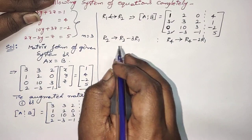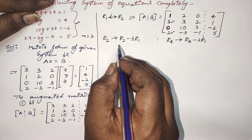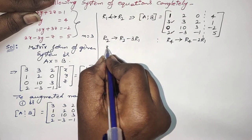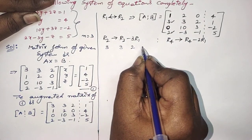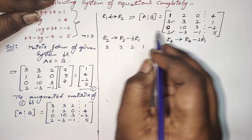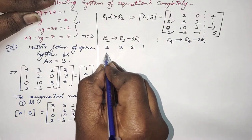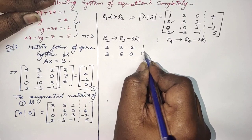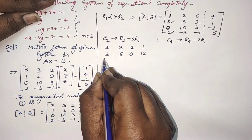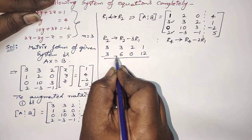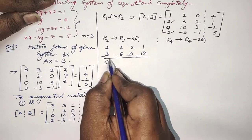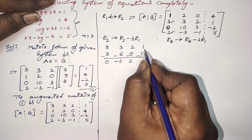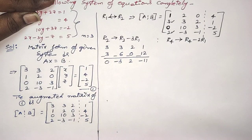What is R2? It is 3, 3, 2, 1. Multiply the first row by 3: 3×1=3, 3×2=6, 3×0=0, 3×4=12. Subtracting: 3−3=0, 3−6=−3, 2−0=2, 1−12=−11.